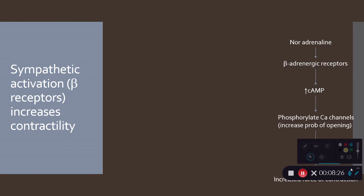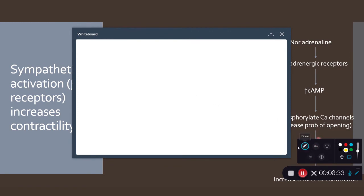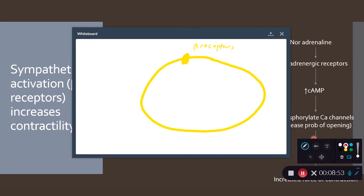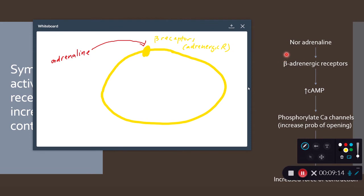To recapitulate what we did, what you might already know, is that in a myocyte, so in the heart muscle, we have beta receptors. And adrenaline binds to these beta receptors. These are also known as beta adrenergic receptors. That's what we're seeing here.